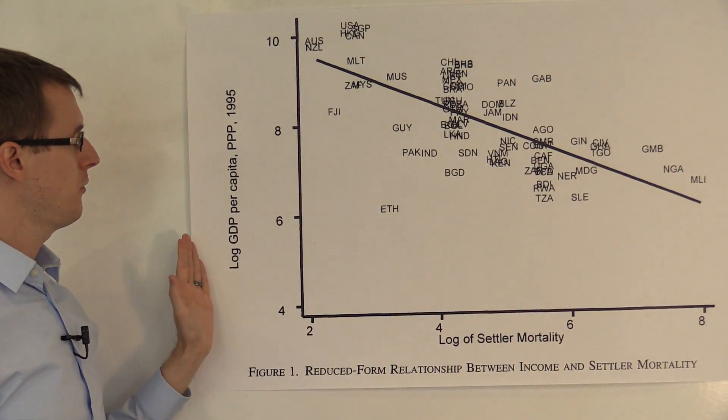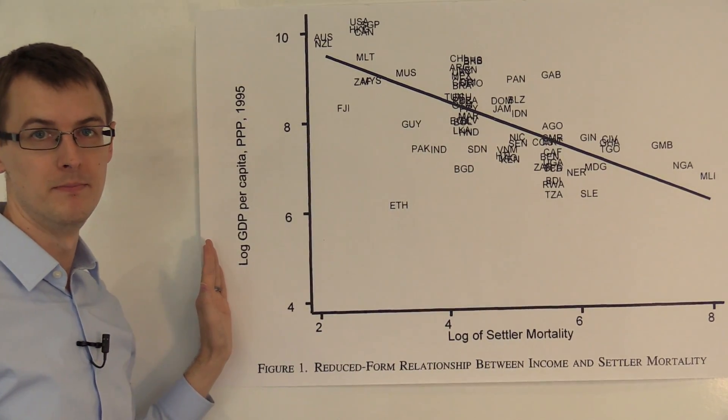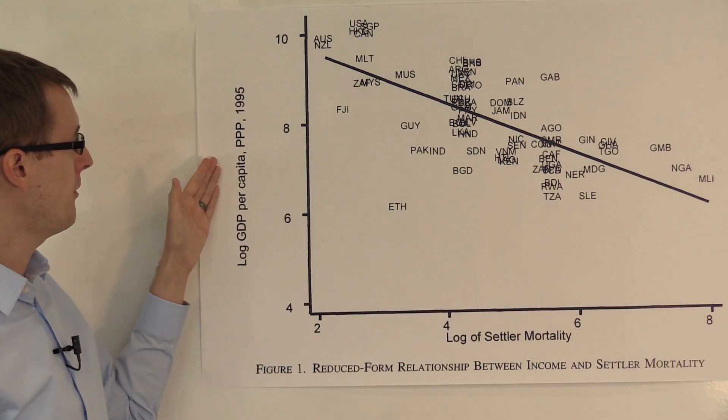On the vertical axis, we've plotted our outcome variable, log GDP per capita in 1995.